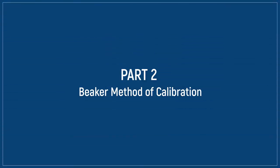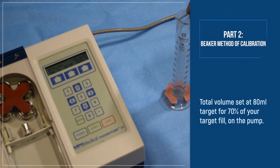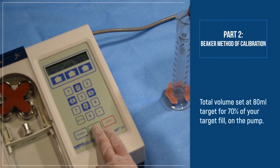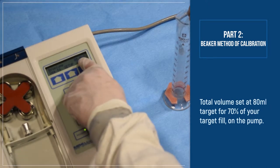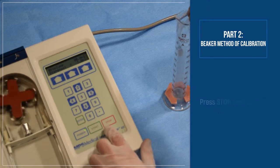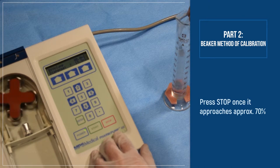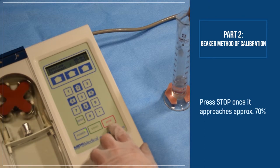Part 2, Beaker Method of Calibration. In this example, we've set our target fill to 80 mLs. For calibration purposes, target to 70% of your target fill for your sample size. Press start. Press stop once it approaches approximately 70%.